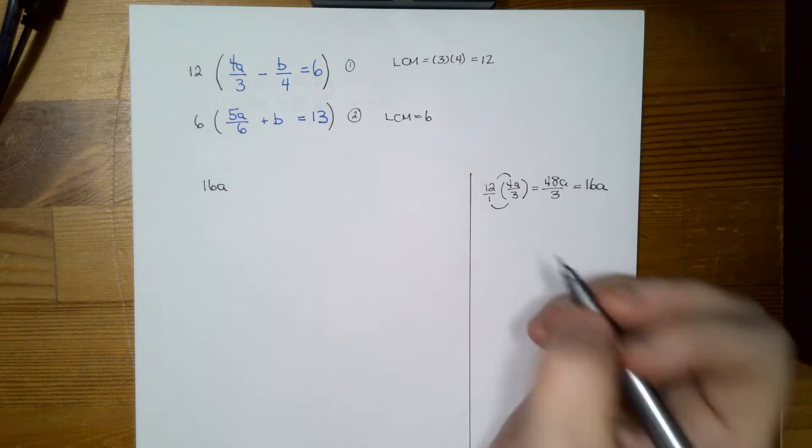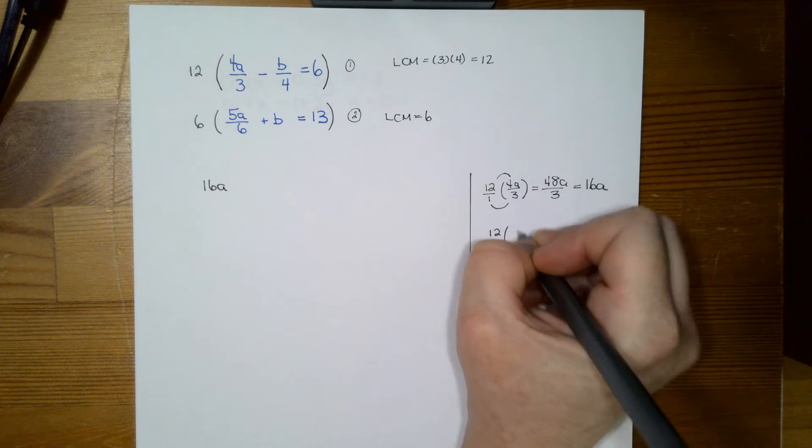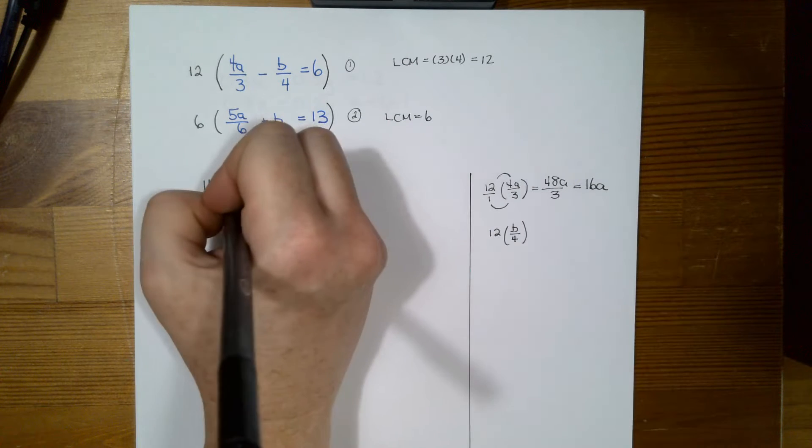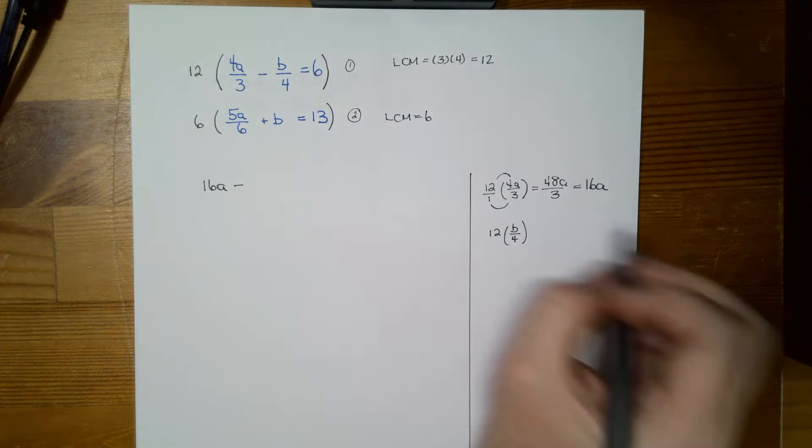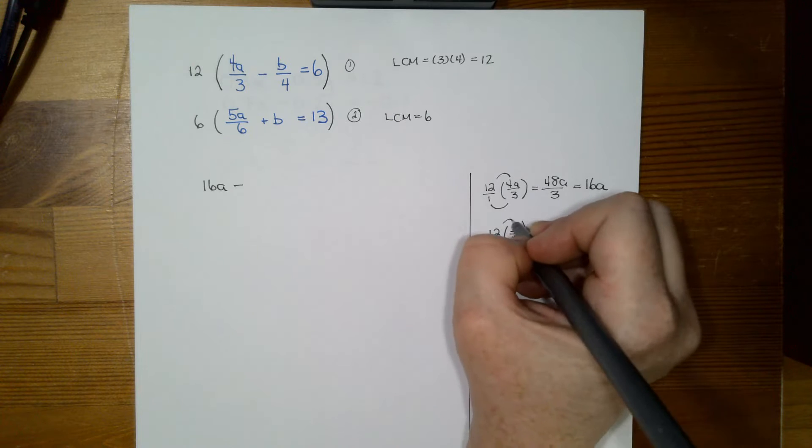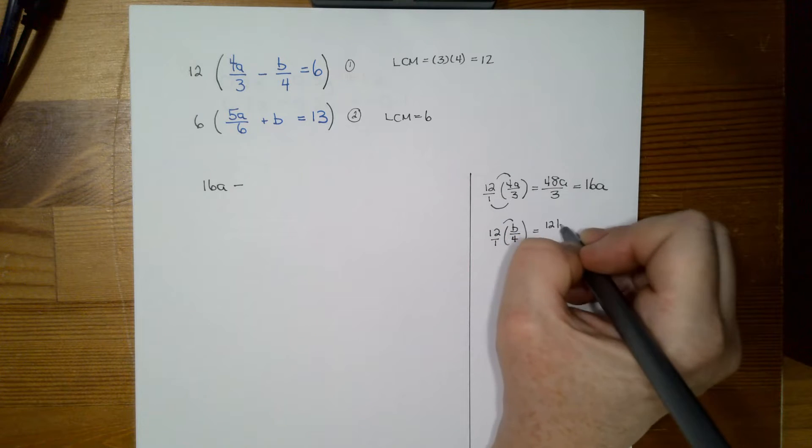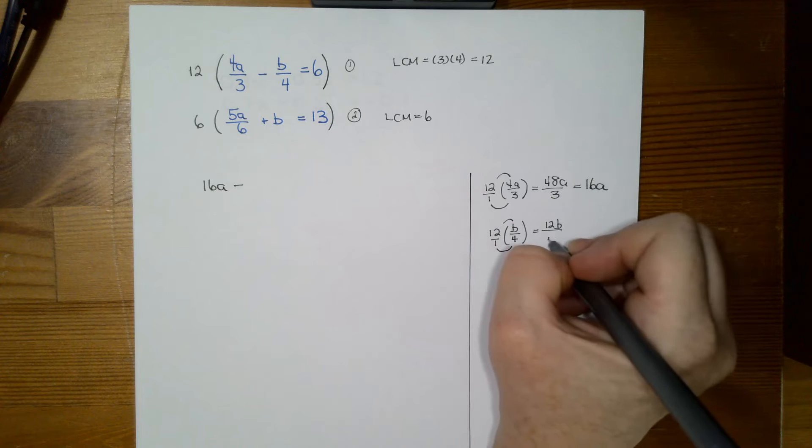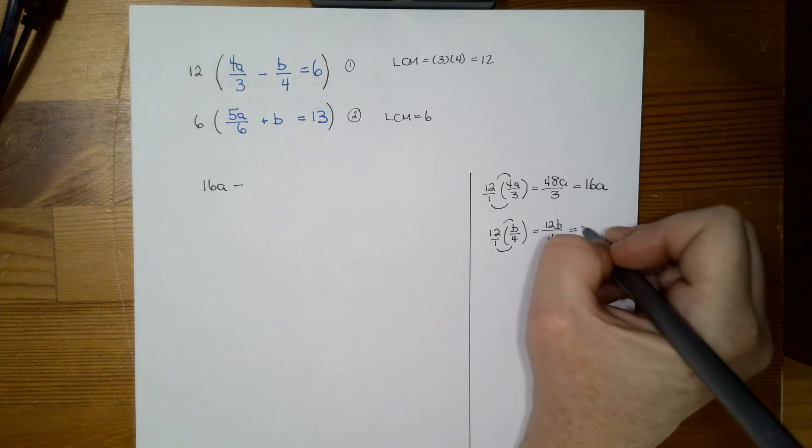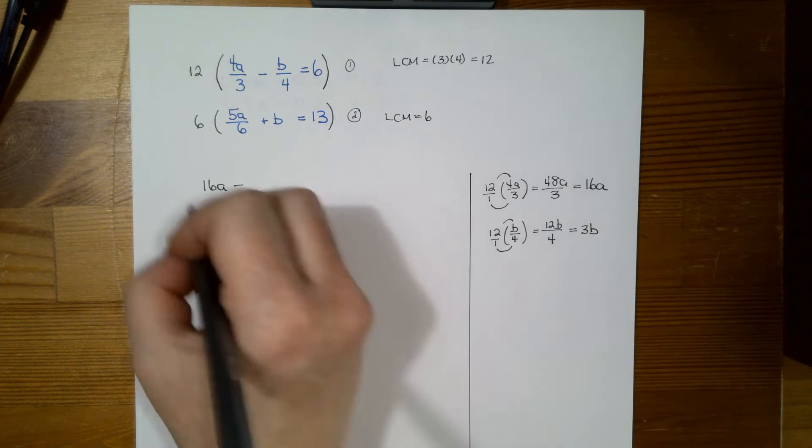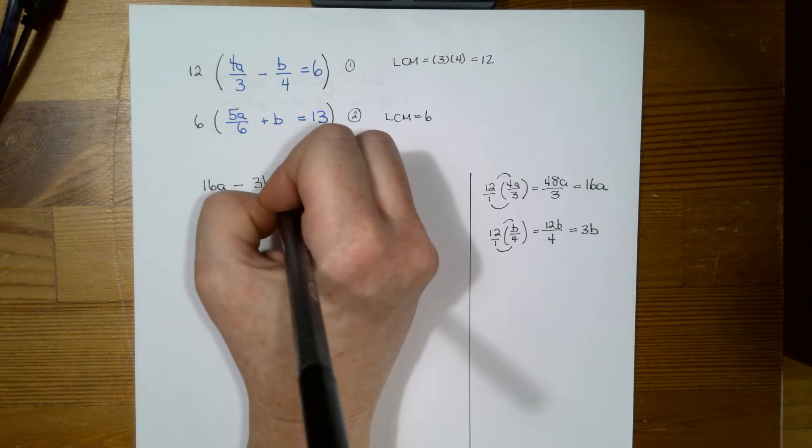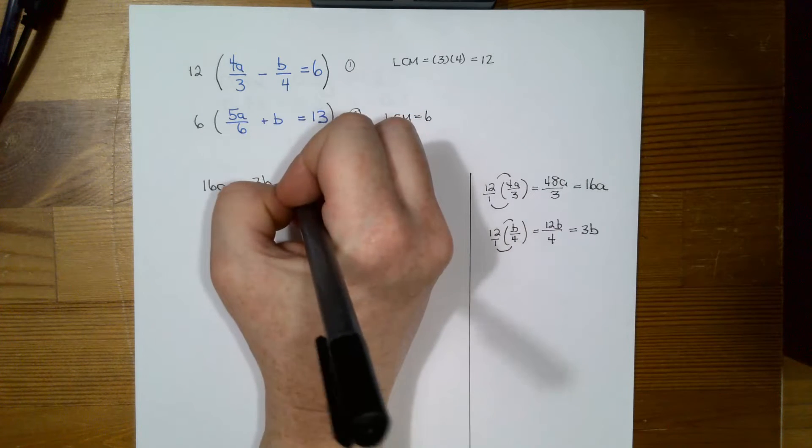Then I'm going to multiply 12 by b over 4. So I'm just going to put my subtract here. So I have 12 times b over 4. So once again, it's just going to be 12 times b, which is 12b over 1 times 4, which is 4. And 12 divided by 4 is 3b. So I have 16a minus 3b equals and 12 times 6 is 72.